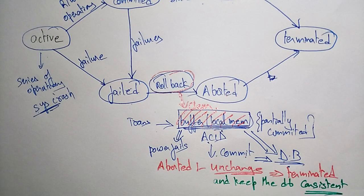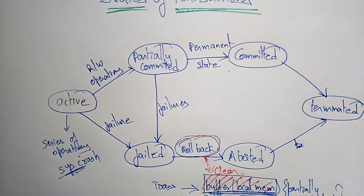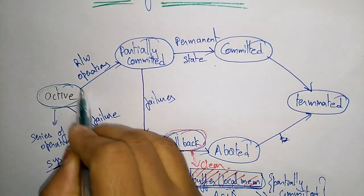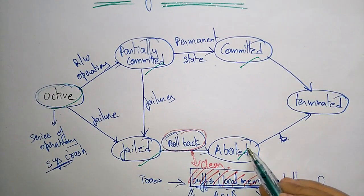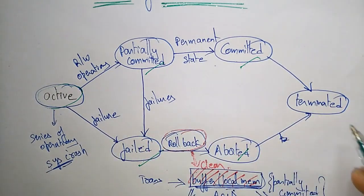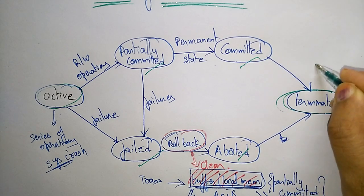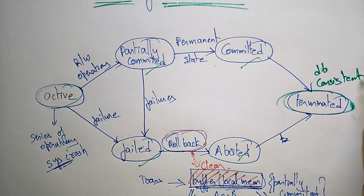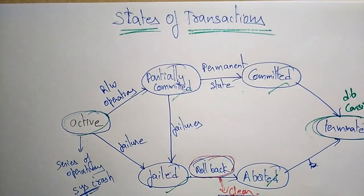The database is kept in a consistent state without changing the values. These are the different transaction states — a transaction may be in active, partial, failed, committed, or aborted state. After the completion of everything the program will be terminated, and you have to make sure that after termination the database is in a consistent state. Thank you.